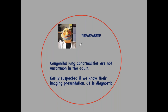In conclusion, to finish the congenital lesions: remember that they are not uncommon in the adult, because most of them are asymptomatic. They are easily suspected if we know the imaging presentation, and CT is diagnostic. As a basic tip: the patient is asymptomatic and the lung may look very abnormal. This combination of apparently conflictive findings should make you think of congenital malformation and proceed to CT, which is diagnostic.